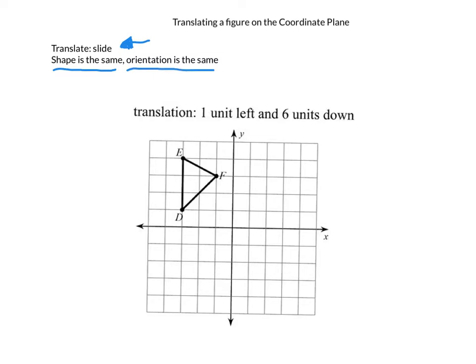So if you look at the triangle on the coordinate plane now, segment DE is straight up and down. And so that means when we're finished translating this, our segment DE will still be straight up and down. It won't be turned at all.